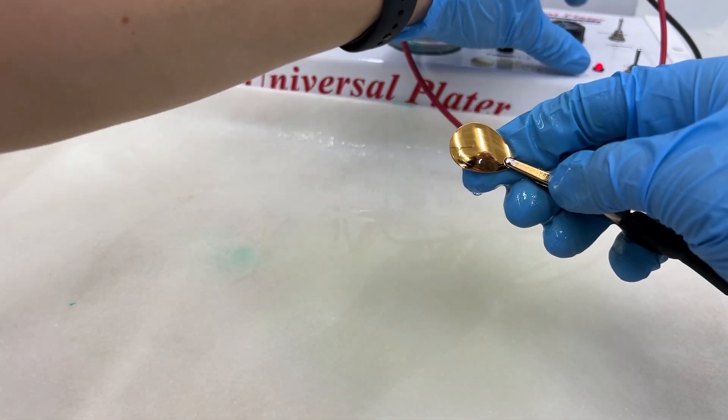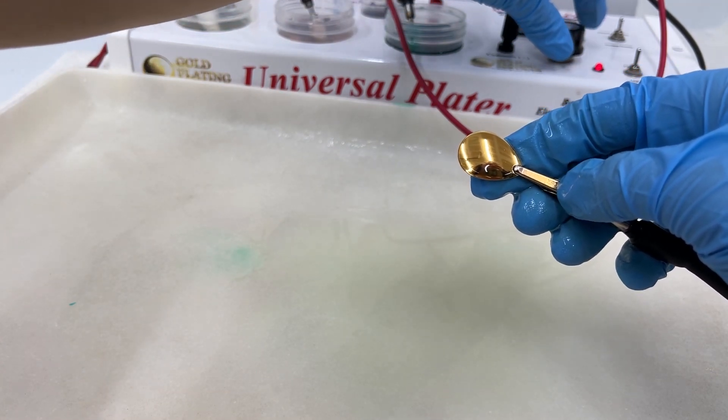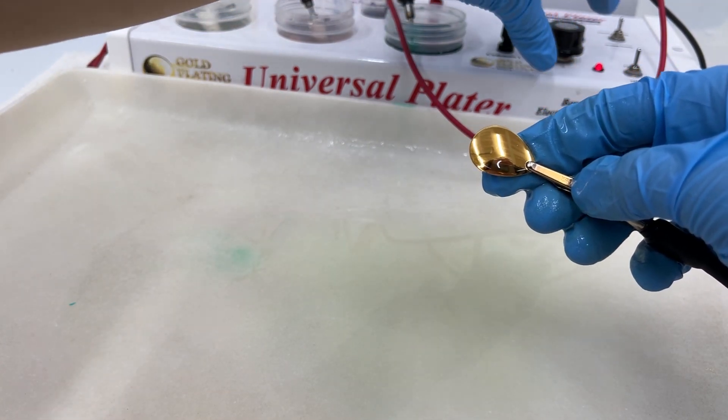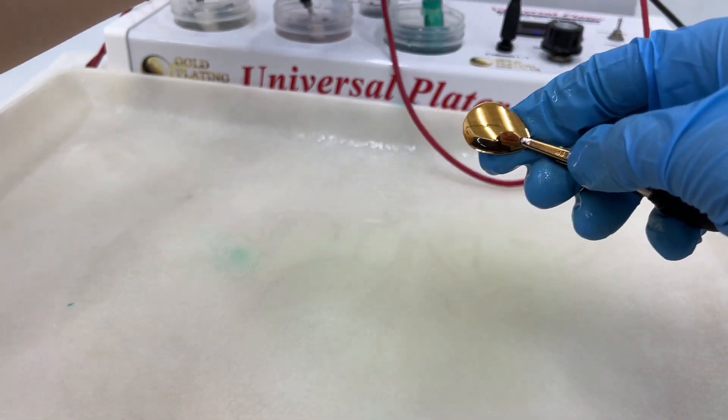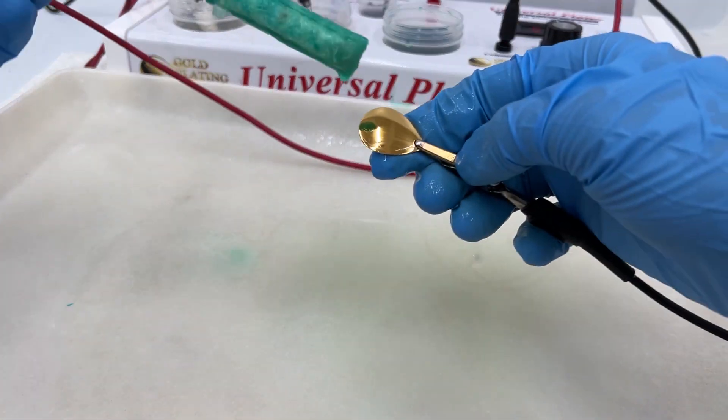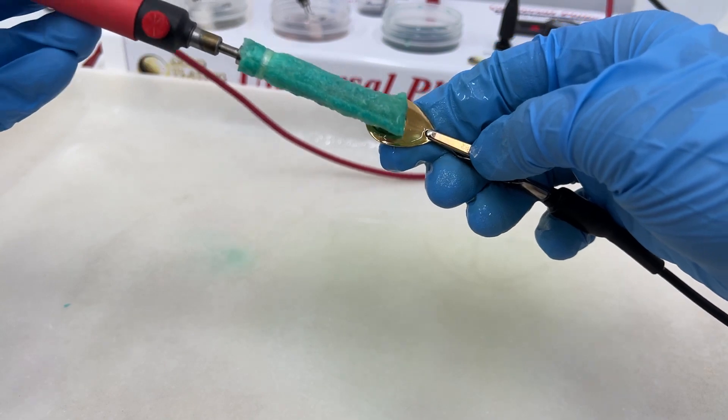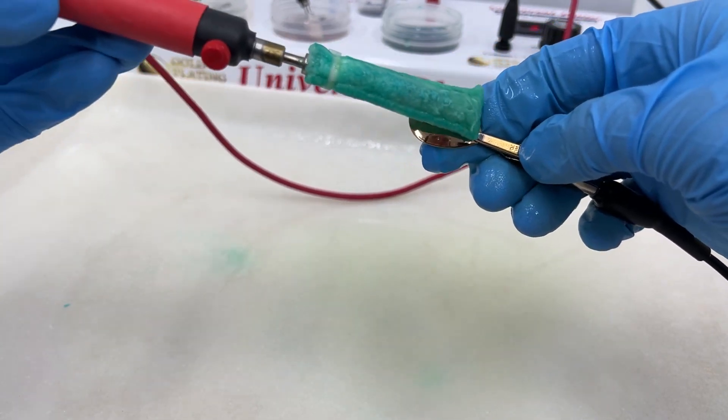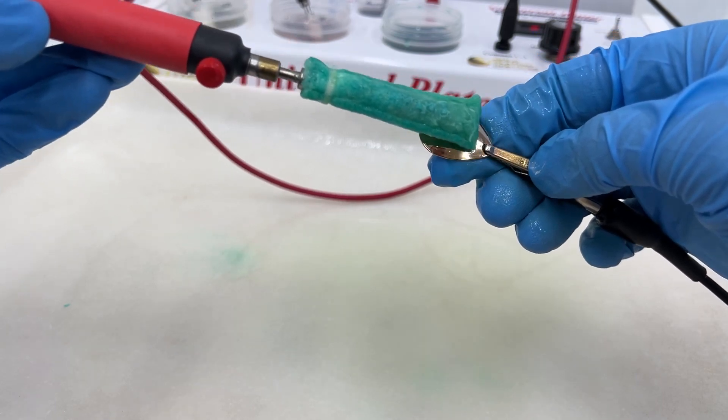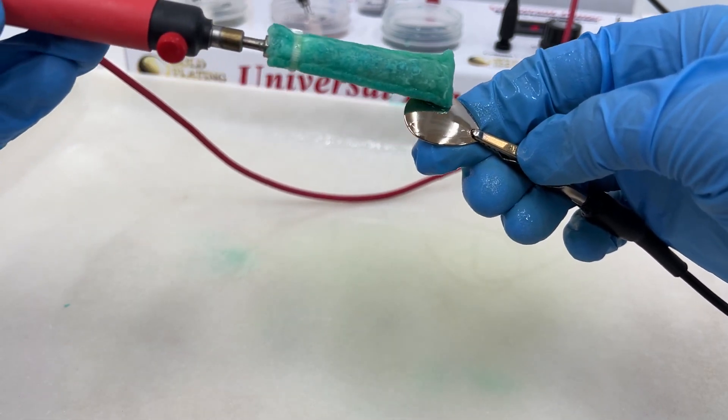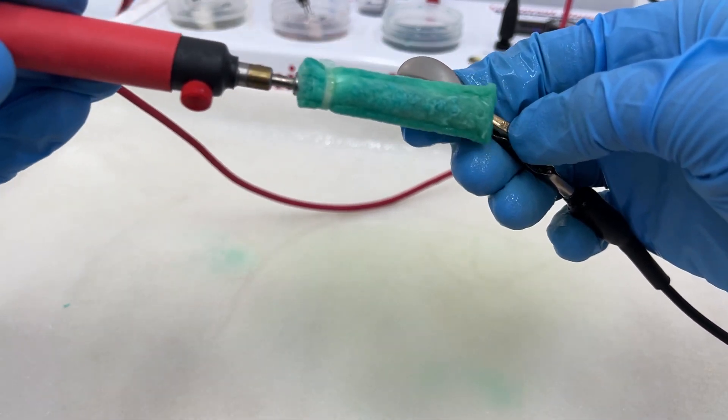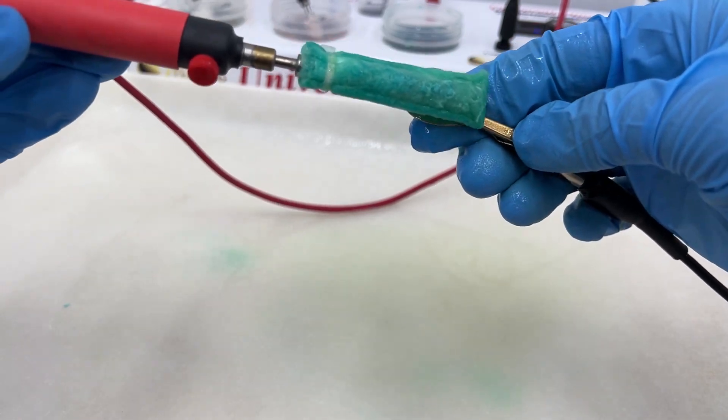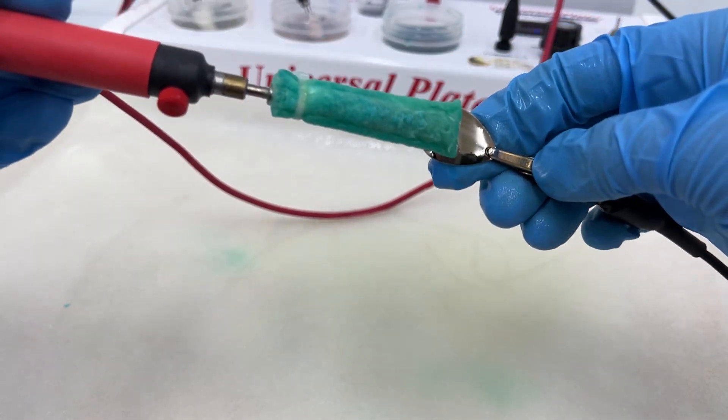We'll turn our machine down to about three volts. Get the brush nickel and we'll just brush that onto this piece. See, it's going on pretty quick. It's looking really good. If you want your items to have that nice silver color, this is a good way.